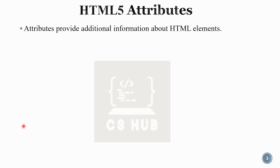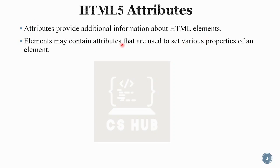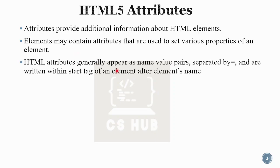There is a little extra information you can add to elements, like styling, language, or orientation — these are all added as attributes. They provide additional information about HTML elements. HTML elements have a default structure and way of representation, but we can add extra features using attributes like height, font, and others. Elements may contain attributes that are used to set various properties of an element. HTML attributes generally appear as name-value pairs separated by an equal sign, and are written within the start tag of an element after the element's name.